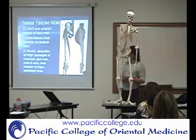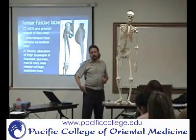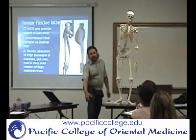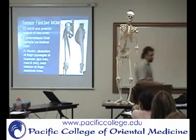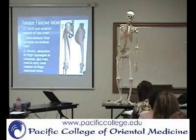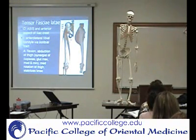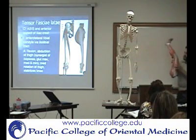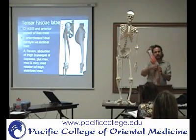The tensor fasciae latae is a little bit more to the front, and the belly of the muscle is short — it's just up here. Even though it technically inserts all the way down into the tibia, the bulk of it is just fascia. You can see the muscle part is just right here, and then it goes into the iliotibial band. Part of the gluteus is also going to insert into the IT band as well.